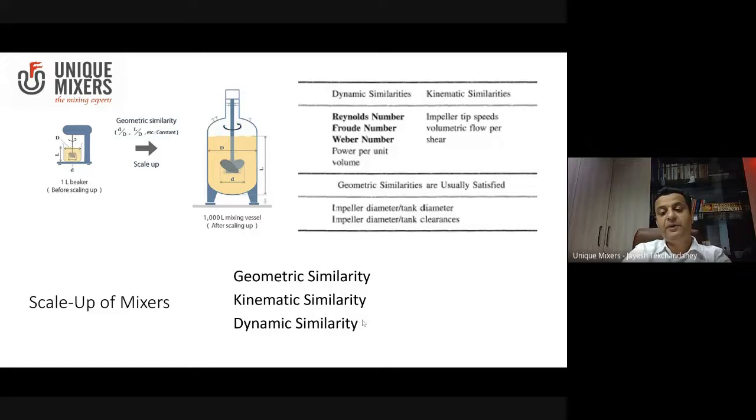It will focus on the geometric similarity of the system. So when you mean geometric similarity, what you see on the left, you see that there is a one liter beaker, that's a lab equipment and that is scaled up to a thousand liter mixing vessel.